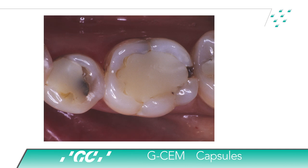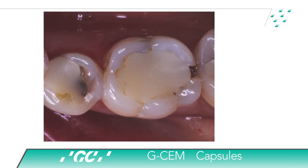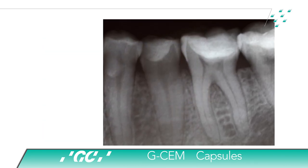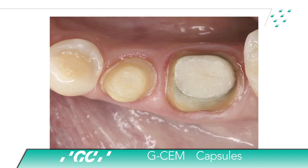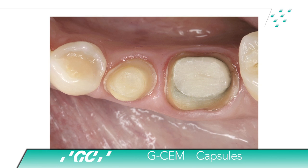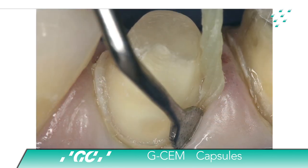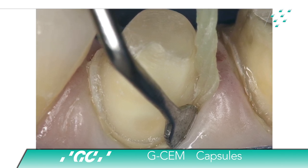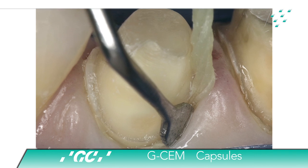Pre-operative occlusal view of mandibular left second premolar and first molar with existing composite restorations with defective margins and recurrent caries. Clinical view of crown preparation after removal of existing restoration, recurrent decay, and placement of resin-modified glass ionomer, Equia. After provisional restorations are removed, the preparations are isolated for the cementation procedure using the modified dam placement technique and a gingival retraction cord.